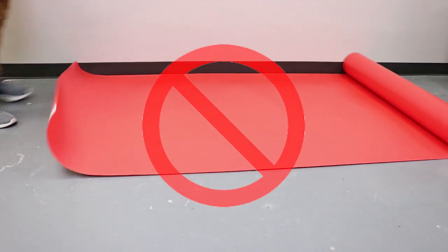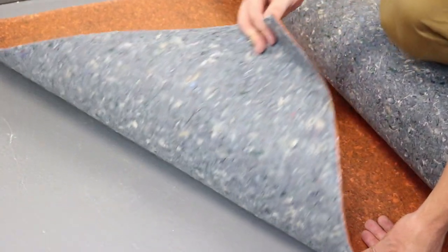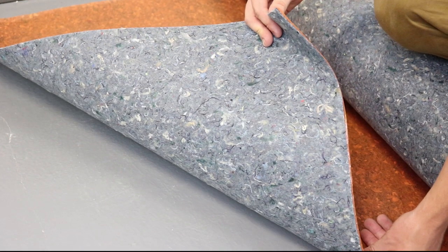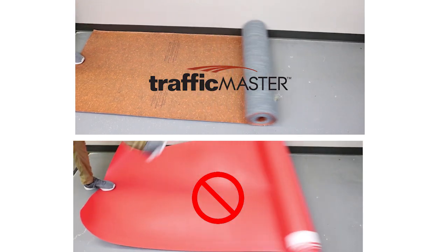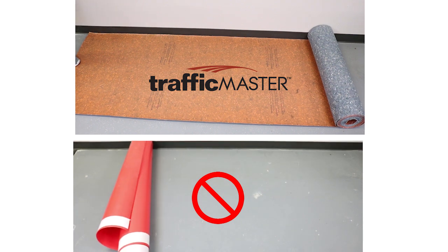Unlike many cheaper foam materials available, Traffic Master Fiber Underlayment, found exclusively at the Home Depot, is made from a dense recycled fiber blend, making it roll out easily and stays flat with no recoil, making it much easier to work with on the job site.